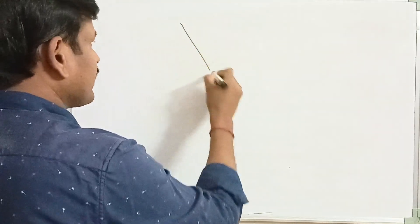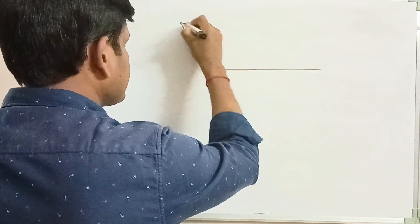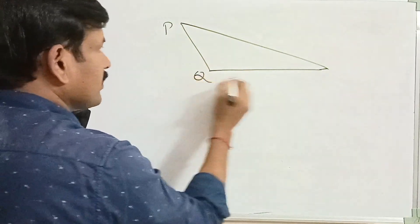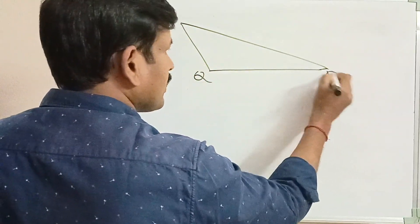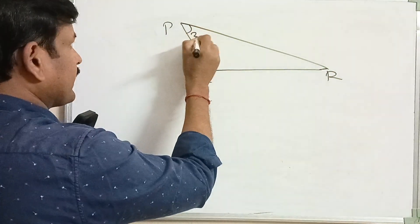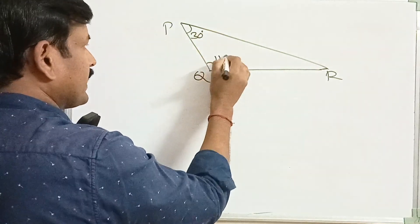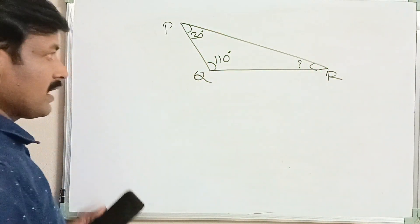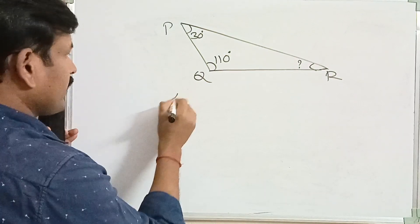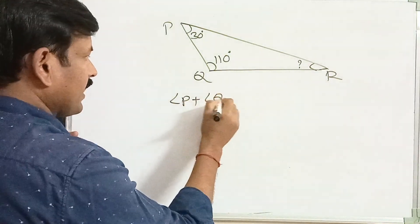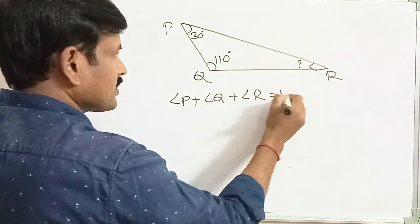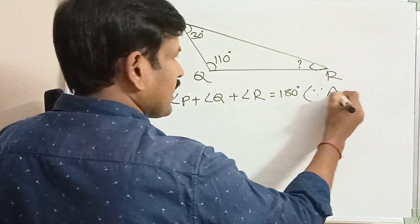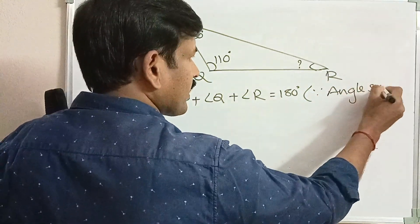Let us move on to the next example. In an obtuse-angled triangle PQR, angle P is 30 degrees and angle Q is 110 degrees. Then find angle R. We have angle P plus angle Q plus angle R equals 180 degrees, since the angle sum property of a triangle.